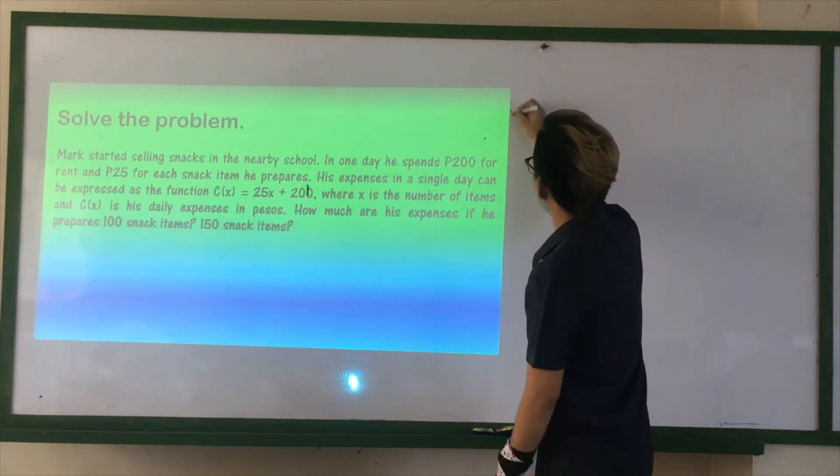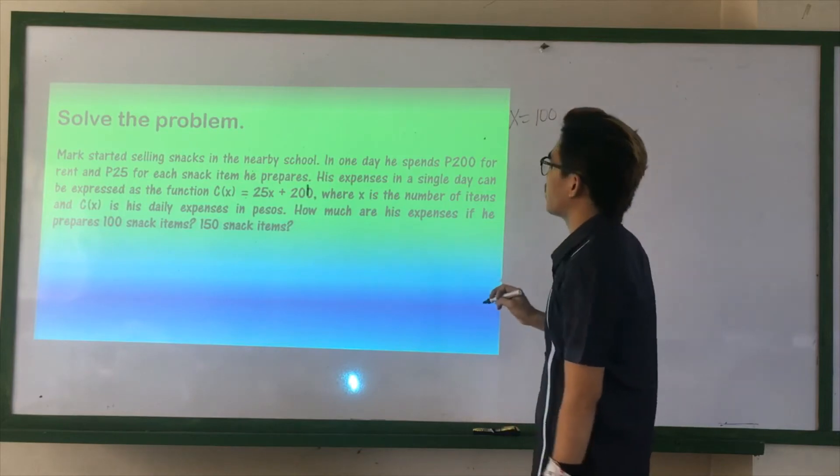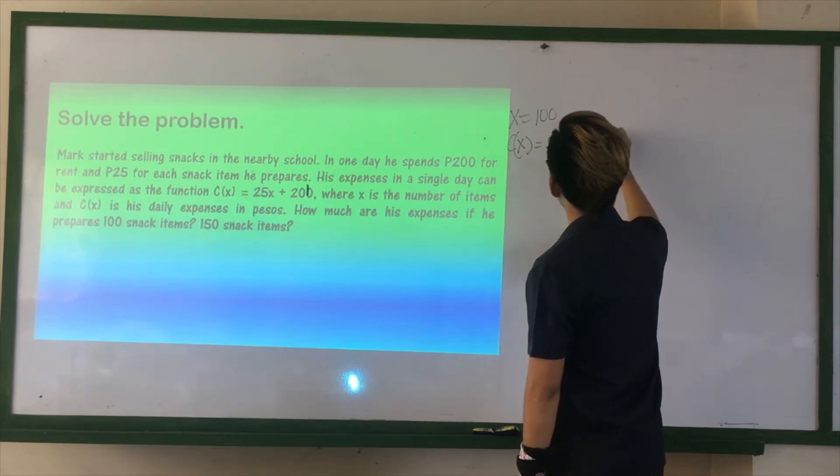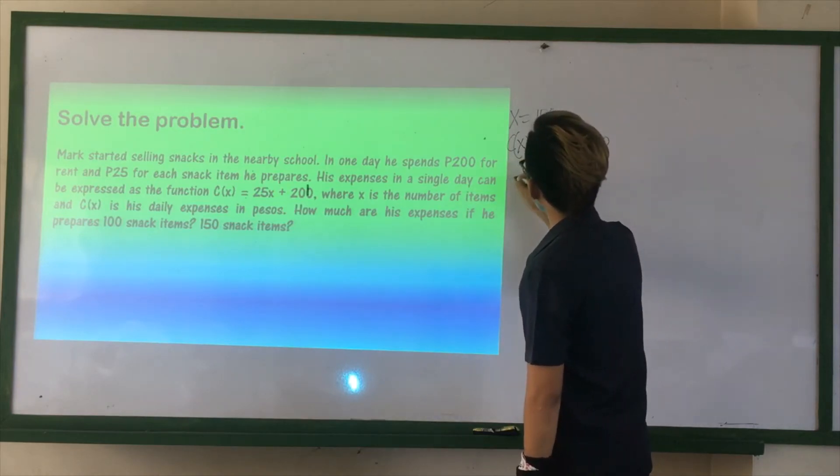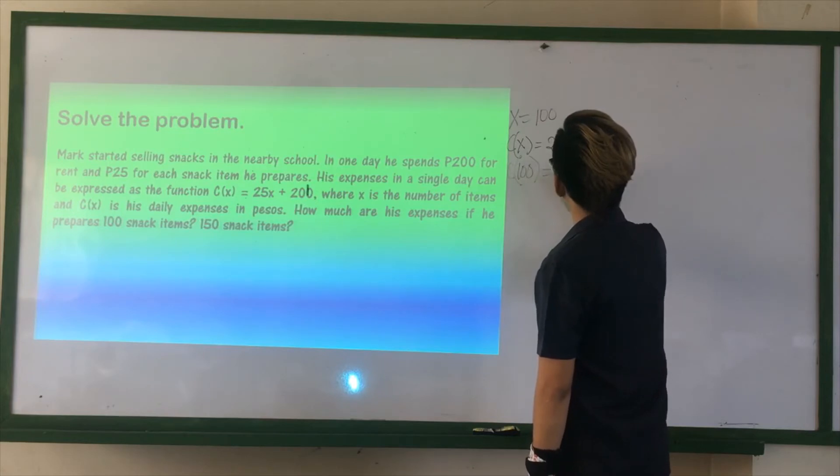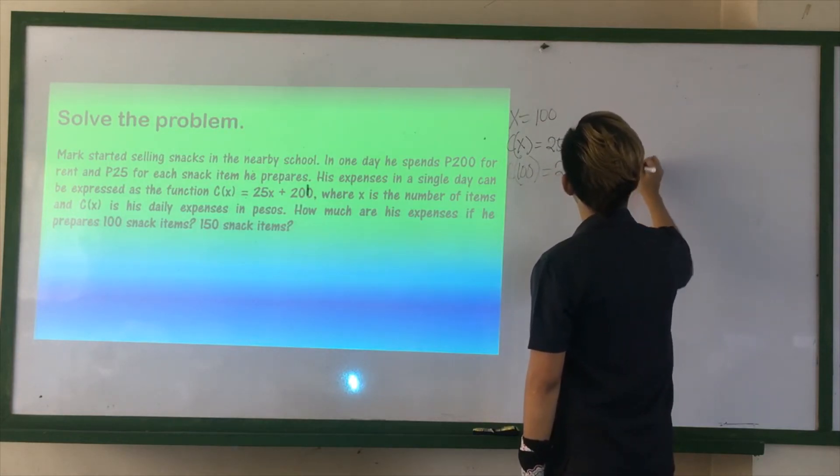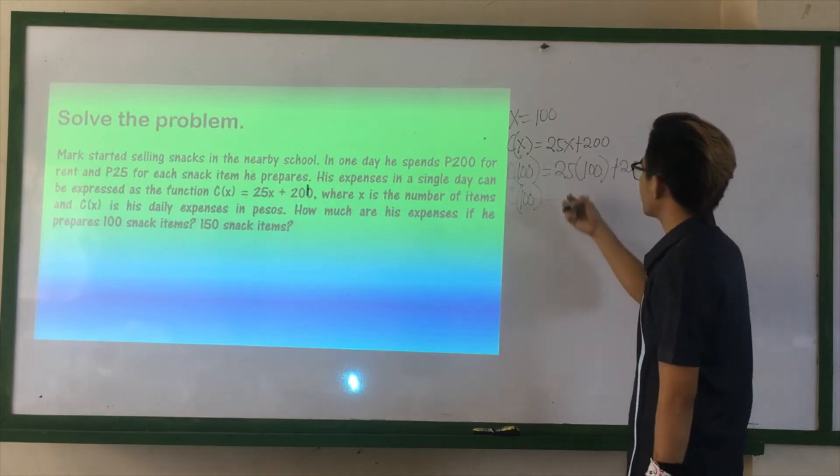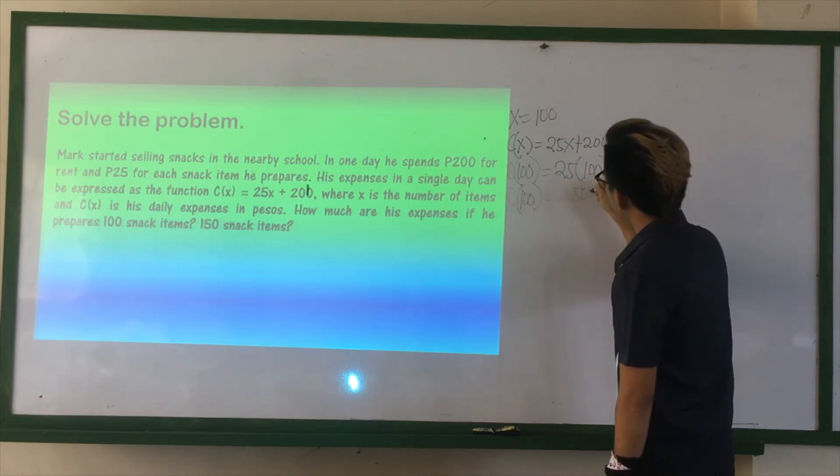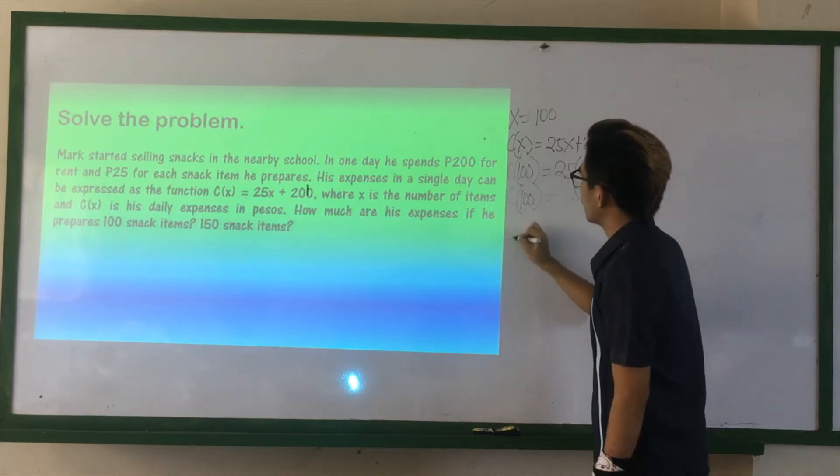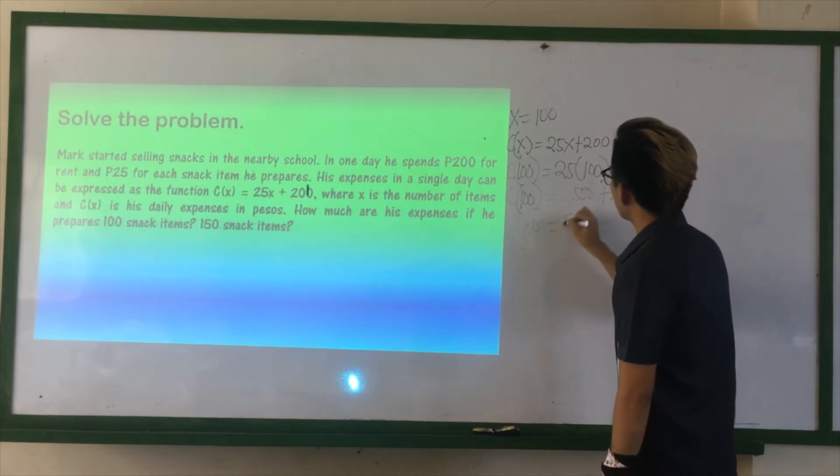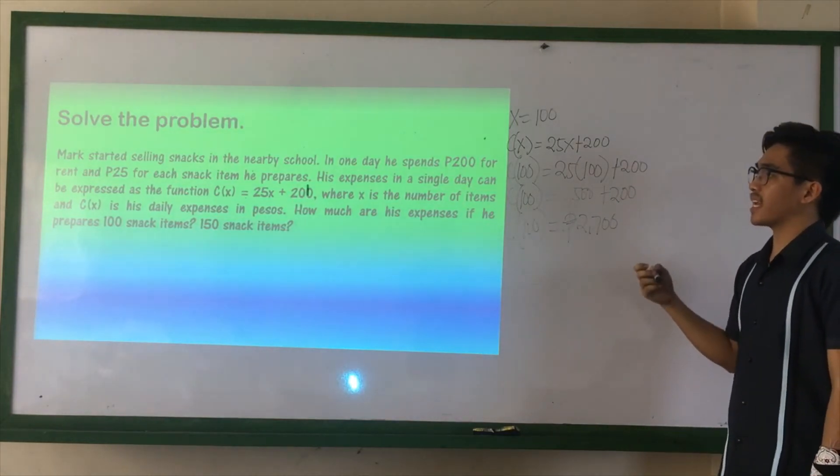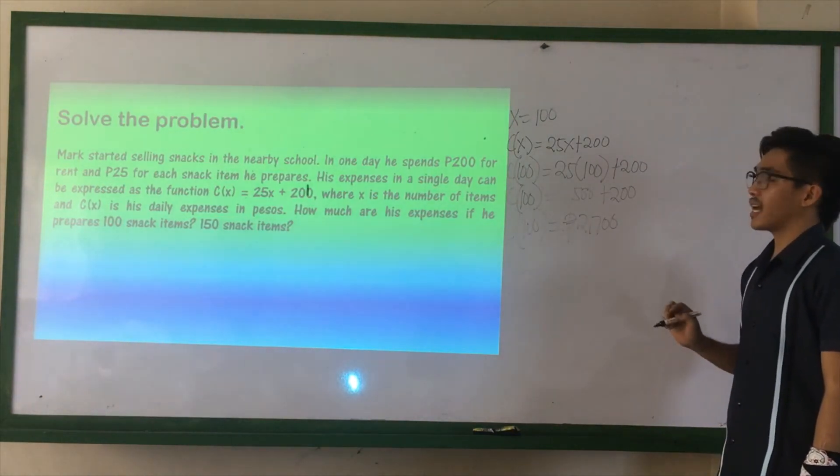Alright, now, we have first 100 snack items. So, we have the function C of X equals 25X plus 200. Remember, we replace the value of the variable. So, we have 100, 25 times 100 plus 200. So, we have C of X equals 25 times 100, that is 2,500 plus 200. And, to simplify, we have the final answer of 2,700 pesos. So, if Mark prepares 100 snack items, he would spend 2,700 pesos.